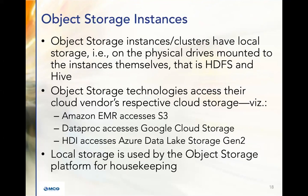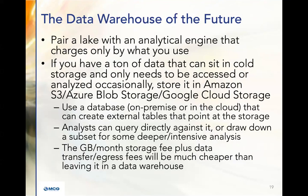The big three cloud storage options are Amazon S3, Google Cloud Storage, and Azure Data Lake Storage Gen 2. Object storage instances and clusters have local storage on the physical drives mounted to the instances themselves — that's HDFS and Hive. Object storage technologies access their cloud vendors' respective cloud storage. Amazon EMR accesses Amazon S3, Dataproc accesses Google Cloud Storage, HDInsight accesses Azure Data Lake Storage Gen 2. Local storage is used by the object storage platform for housekeeping.